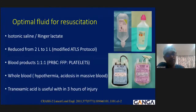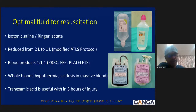Optimal fluid resuscitation has evolved from hypotonic to isotonic saline; Ringer's lactate can also be used. Crystalloids have been reduced from 2–3 liters to 1 liter per modified ATLS protocol. Blood products are given in a 1:1:1 ratio — packed red blood cells, fresh frozen plasma, and platelets. Whole blood can cause hypothermia and acidosis. Tranexamic acid is useful in the first three hours of injury in severe hemorrhagic shock.